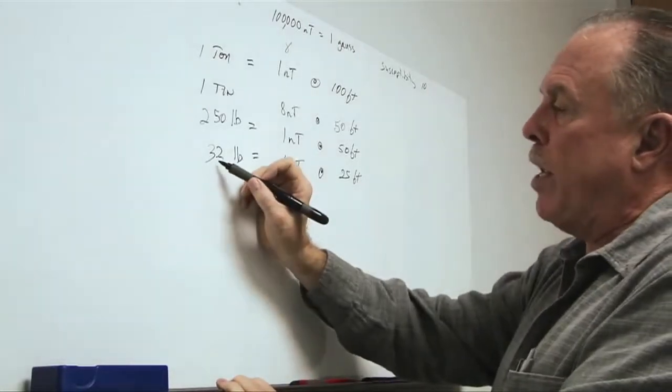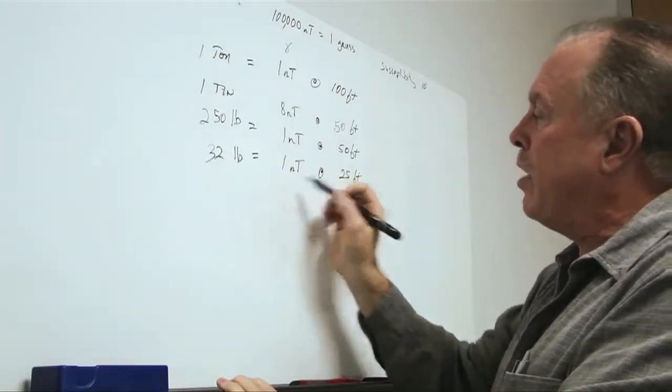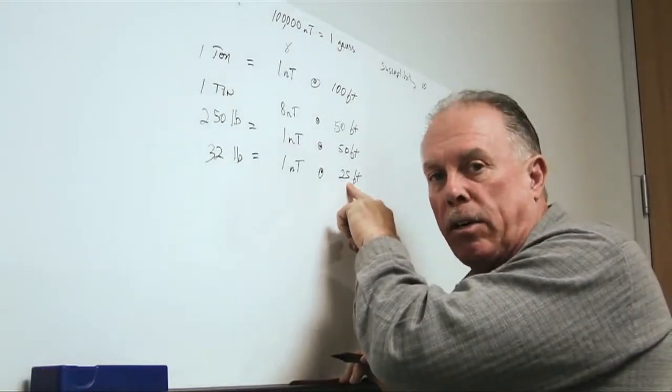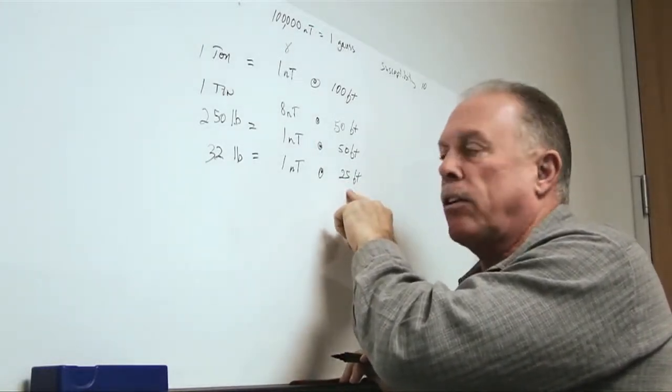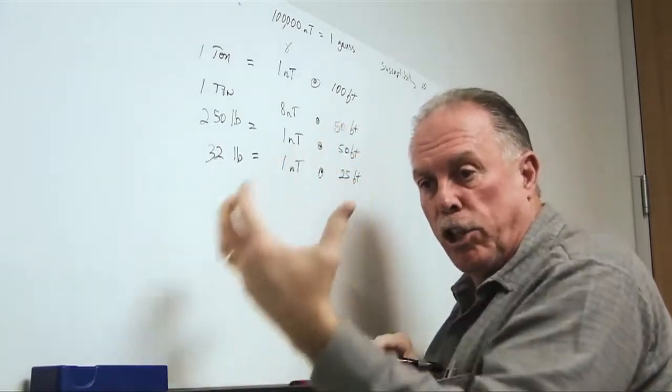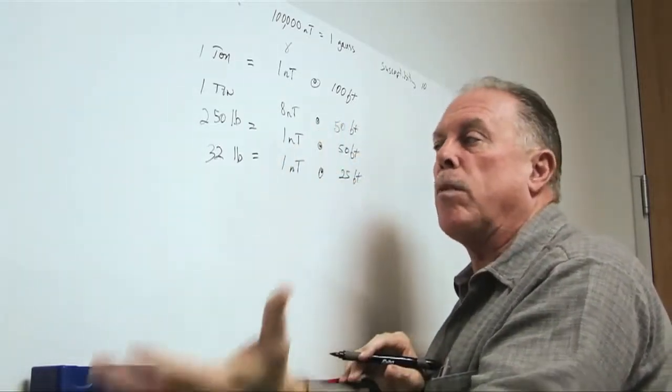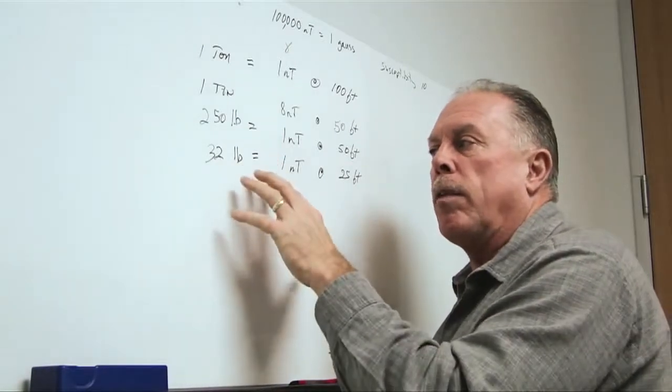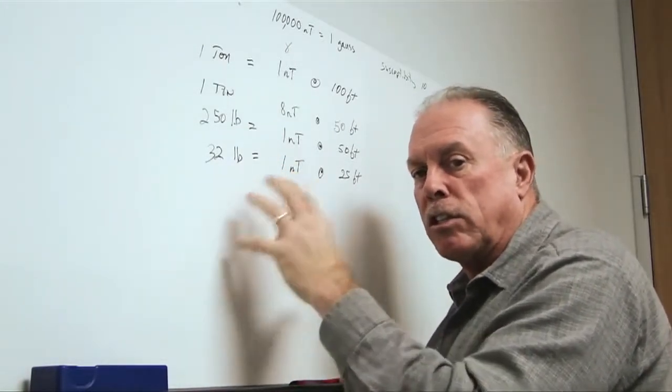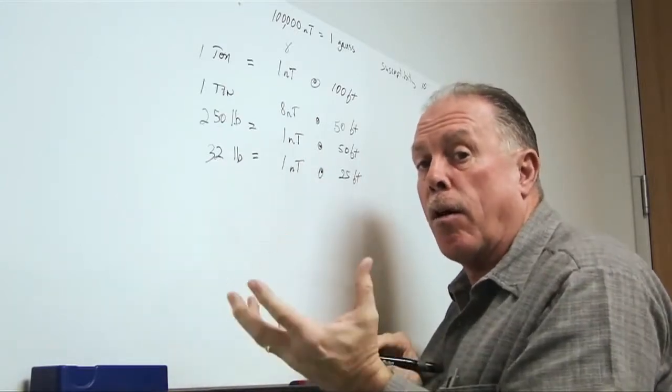And, in fact, we can see it much, much further, 25 feet, than we could see it with any kind of metal detector. A metal detector falls off as inverse sixth power because of inverse cube going out and inverse cube coming back. So, the magnetometer has the ability to see targets at a much greater range than a standard electromagnetic type of device.